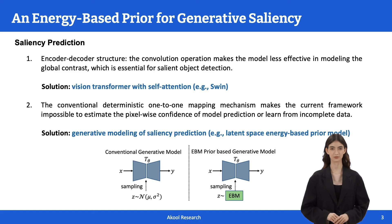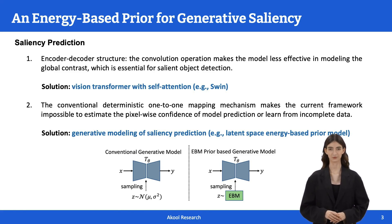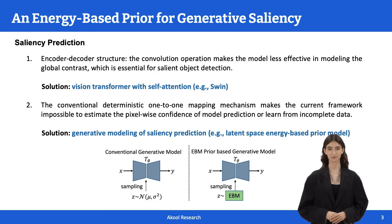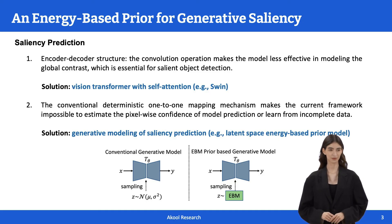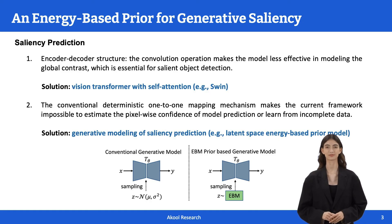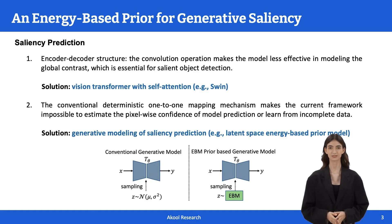To solve the first issue, this work uses a vision transformer to replace the encoder-decoder. Transformer has achieved great success in natural language processing and has obtained great interest in the computer vision community for tasks such as classification, object detection, and image segmentation. For example, SWIN presents a hierarchical transformer with a shifted windowing scheme to achieve an efficient transformer network with high-resolution images as input.